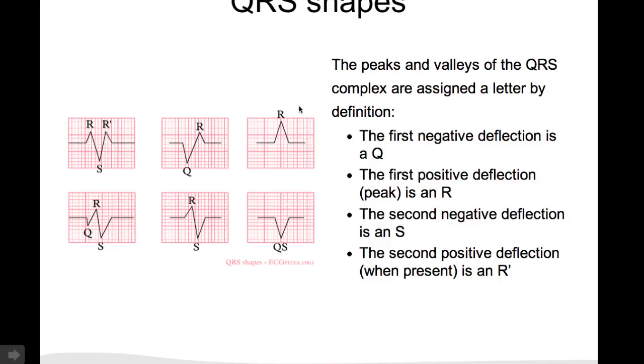There are definitions of how you name all these peaks and valleys of the QRS complex. The first positive deflection is the R wave. The first negative deflection is a Q wave. The first negative deflection after the first R wave is an S wave. And if you have a secondary R wave, it's called R prime. And you have monophasic R complexes, QRS complexes, RS complexes, and QS complexes.